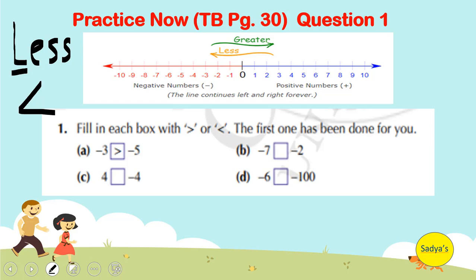Let's look at A part. Minus 3 and minus 5. Minus 3 is here and minus 5 is here. Going from left to right, we see that minus 5 comes first. So minus 5 is a smaller number as compared to minus 3. So minus 3 is greater than minus 5.